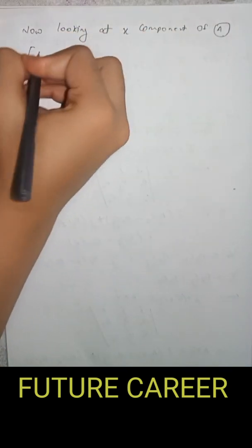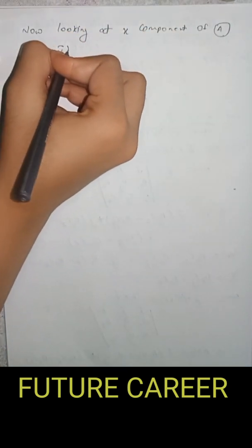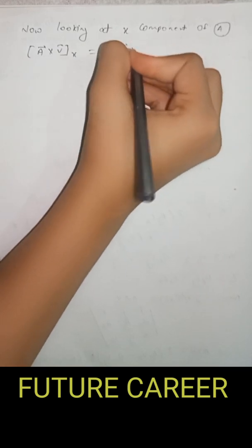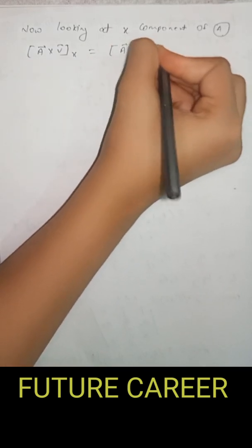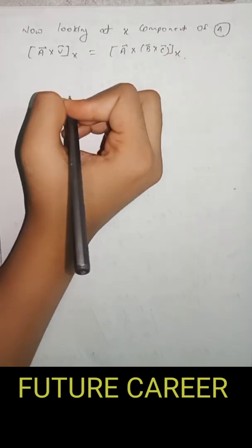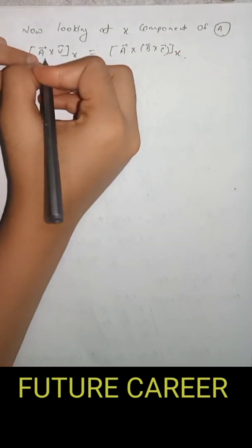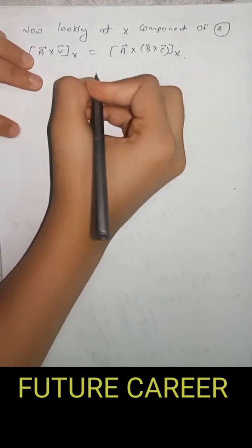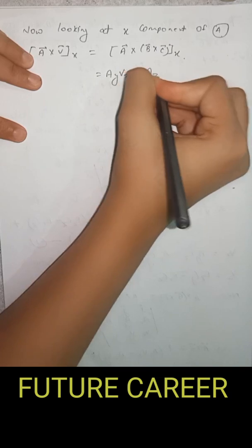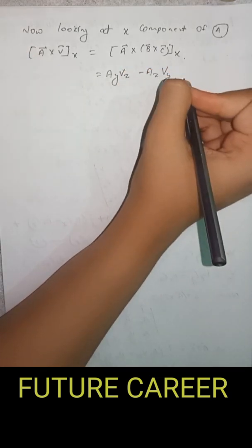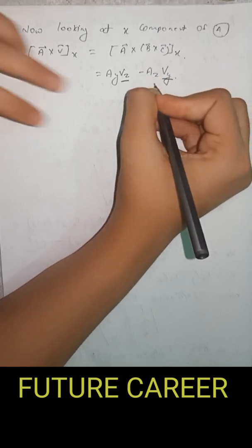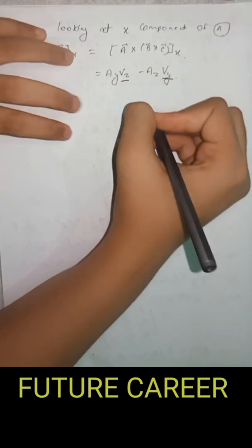Now looking at the X component of equation A: the X component of A cross B cross C equals the X component of A cross V, which is Ay Vz minus Az Vy. We have already found the values of Vz and Vy, so we substitute them into this equation.